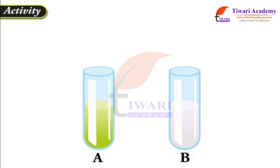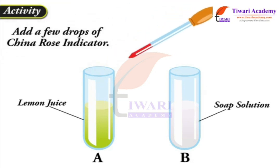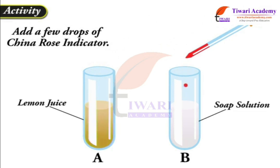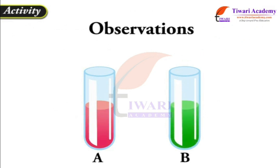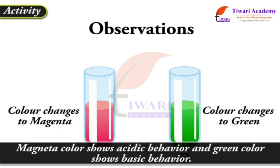Take two test tubes and mark them A and B. Add lemon juice in test tube A and soap solution in test tube B. Add a few drops of China Rose indicator in both test tubes. Observation: in test tube A, the color has changed to magenta, whereas in test tube B, it shows green color. Magenta color shows acidic behavior and green color shows basic behavior.